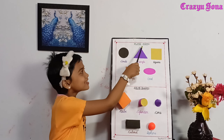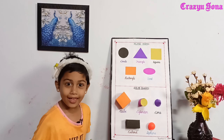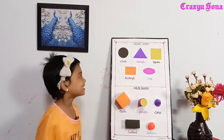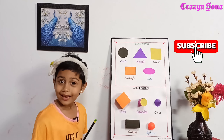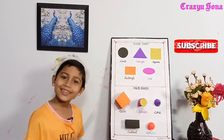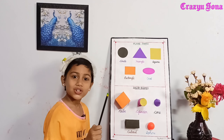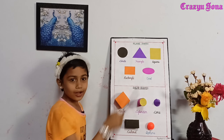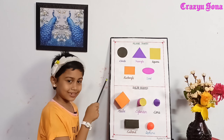Plane shapes: This is a circle — circle has no sides and no corners. This is a triangle — triangle has three sides and three corners. This is a square — square has four sides and four corners. This is a rectangle — rectangle has four sides and four corners.